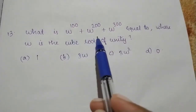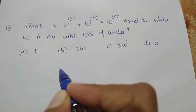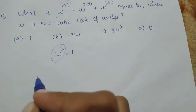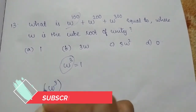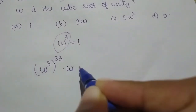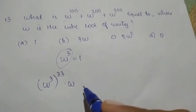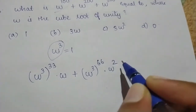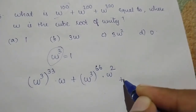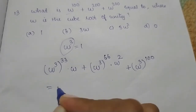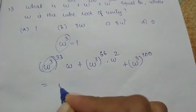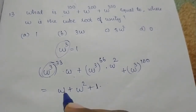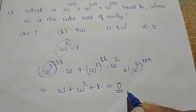Next question: what is omega raised to 100 plus omega raised to 200 plus omega raised to 300? Using omega cubed equals 1, we write omega raised to 100 as omega cubed raised to 33 times omega, giving 1 raised to 33 times omega equals omega. Similarly, omega raised to 200 equals omega squared, and omega raised to 300 equals 1. So the sum is 1 plus omega plus omega squared equals 0. Option D is the right answer.